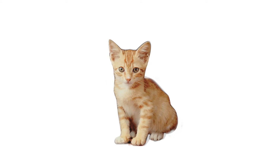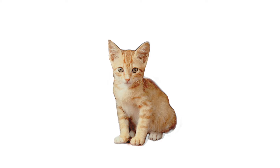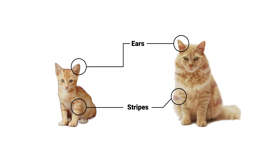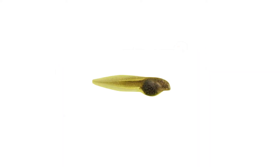Anytime you see something when it's young, like this kitten, you can probably guess what it looks like when it grows up. This kitten will get larger, but it will still have its same orange stripes, its pointy ears, and its green eyes. But is this always true?